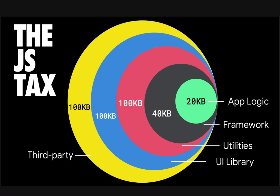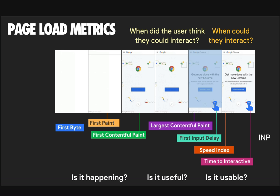What impact do large bundles have on performance? Keep in mind that even if your first-party application logic is quite small, when you factor in your framework, all of the libraries, your UI components, and all of the different layers you're pulling down from NPM — then you throw on third-party code like trackers and analytics on top — it all adds up. I call this the JavaScript tax. It's useful to just be aware of it.